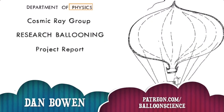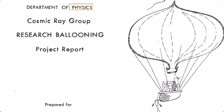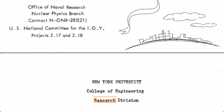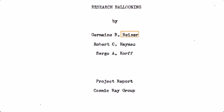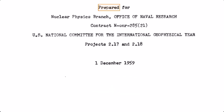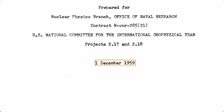Alright, that's it for this part of Research Ballooning. We leave off on page 24. If you like this video, please like it, subscribe to my channel, and share it with your friends. Also, feel free to visit my Patreon to support the production of these at patreon.com/balloonscience, and visit my website at stratosphericballoon.consulting. We'll leave you with the reading of the initial credits which we skipped to get right into the text in the beginning. New York University College of Engineering Research Division, Research Ballooning, by Jermaine B. Beiser, Robert Cohane, and Sir J. Korff. Project Report, Cosmic Ray Group, prepared for the Nuclear Physics Branch, Office of Naval Research, Contract, and the National Committee for the International Geophysical Year. Projects 2.017 and 2.18, December 1, 1959.